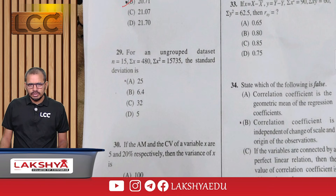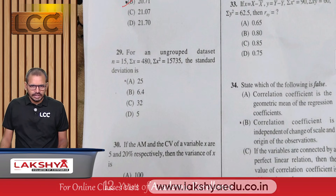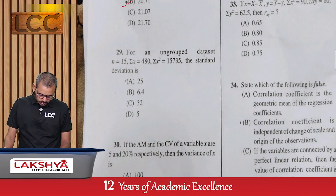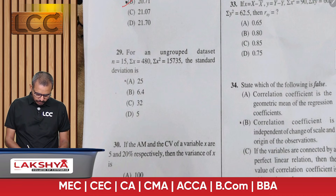Question 29: For ungrouped data, n = 15, Σx = 480, Σx² = 15,735. Find the standard deviation of the distribution — option D.